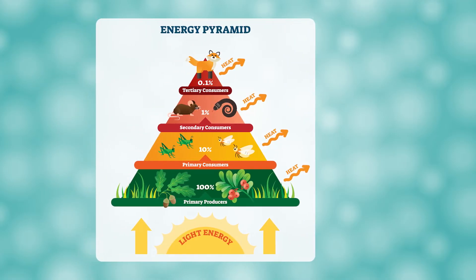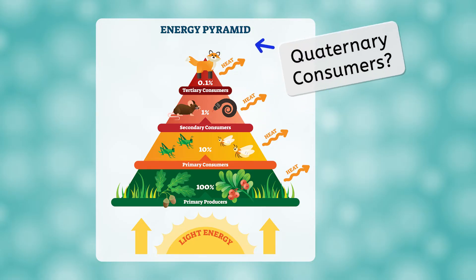In rare cases, there could be another level above this — the quaternary consumers. Any idea why this is rare? Notice the numbers in each level. The producers make use of 100% of the food they make. When they are eaten by primary consumers, only 10% of that energy is passed on. Then only 10% of the energy from the primary consumers passes to the secondary consumers. By the time we get to the top of the pyramid, there's not much energy left. So being a top-level carnivore is actually rather inefficient in terms of energy transfer, because organisms use much of their energy for life processes and can't pass it on in the food chain — it gets converted to heat and escapes into the environment.